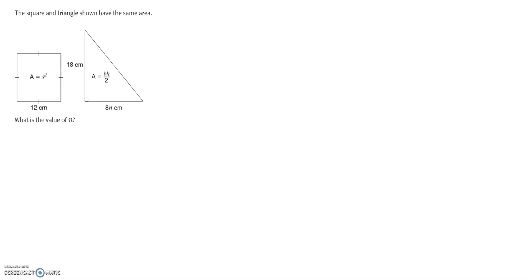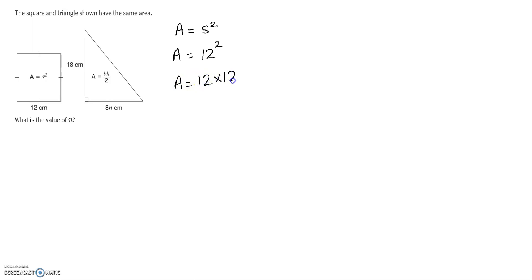For the square, all the sides are the same. The area equals s squared, which means side times side. The side length is given as 12, so I will substitute 12 and square it — 12 times 12. Therefore, the area of the square is 144 centimeters squared.